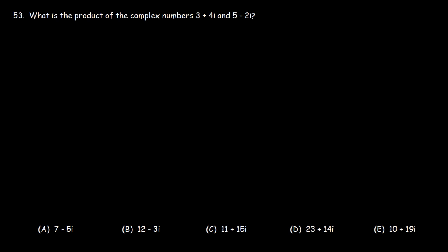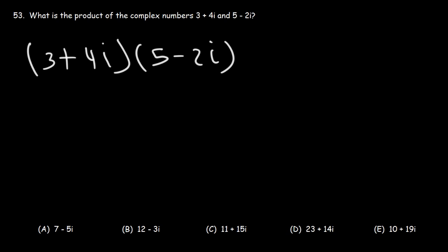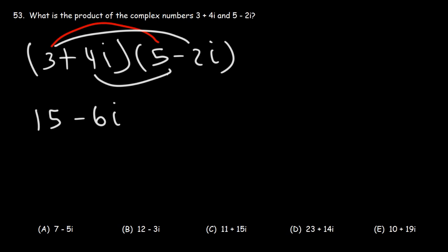Problem 53: What is the product of the complex numbers 3 plus 4i and 5 minus 2i? The product tells us we need to multiply these two complex numbers. Let's FOIL: 3 times 5 is 15, then 3 times negative 2i is negative 6i, then 4i times 5 is 20i, and then 4i times negative 2i is negative 8i squared.